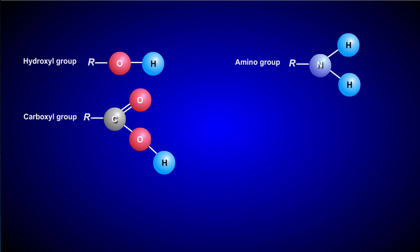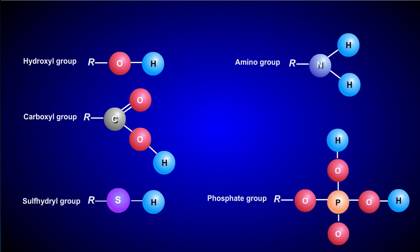In these diagrams, the R refers to where the functional group attaches to the carbon skeleton. The presence of a functional group changes the chemical reactivity of the biomolecule. Functional groups therefore help determine the identity of the biomolecule.